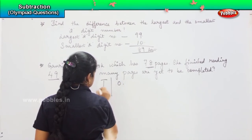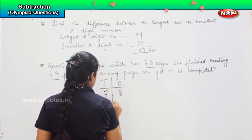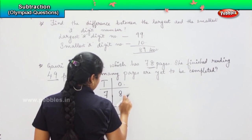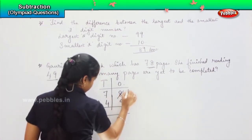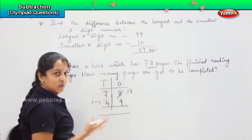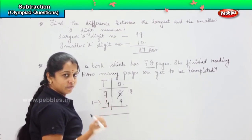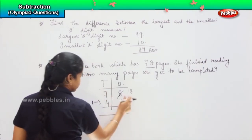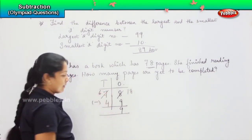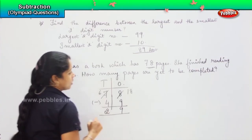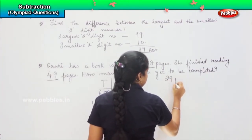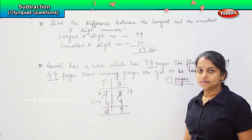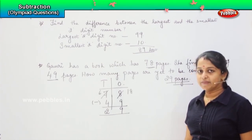So, tens, ones. So 78 minus 49. Again, you cannot subtract 8 from 9, right? So, you will borrow. 18 minus 9 is 9, and since you have borrowed here, this will be reduced by one number. So, 6 minus 4 is 2. So, she has to complete another 29 pages to finish the book. Clear? Are you clear with this? Shall we proceed further?